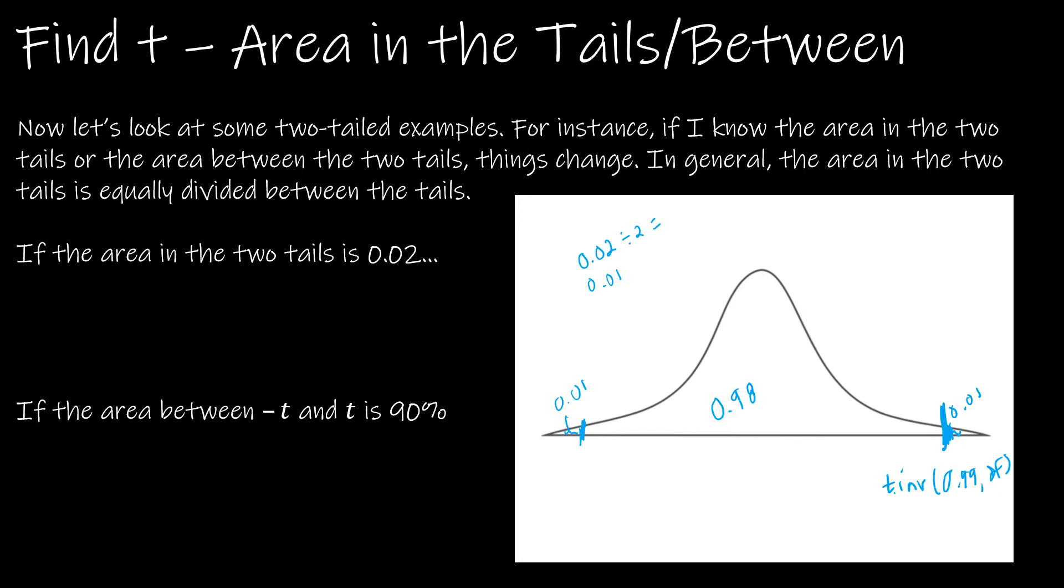This guy would be the opposite of that, which would be t dot inverse of 0.01 because that's the area to the left, and then of course the degrees of freedom.